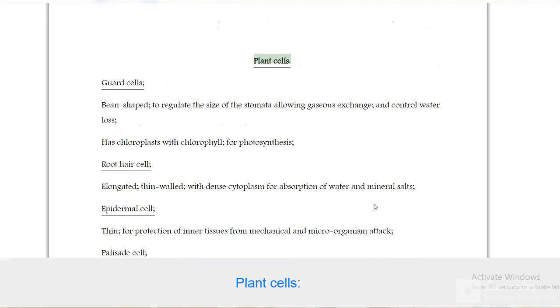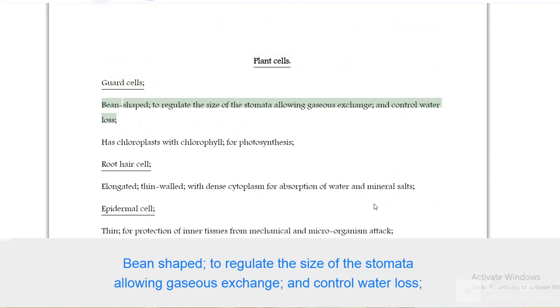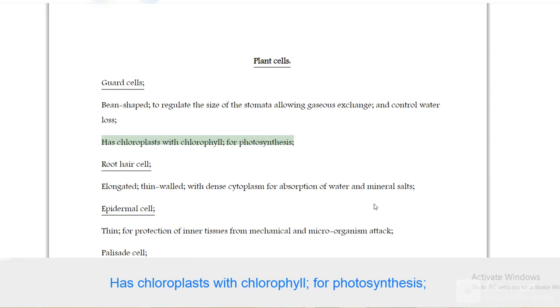Plant cells. Guard cells are bean shaped to regulate the size of the stomata, allowing gaseous exchange and control water loss. Has chloroplasts with chlorophyll for photosynthesis.